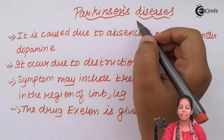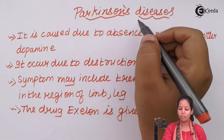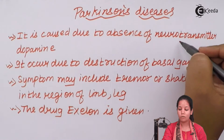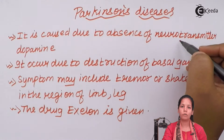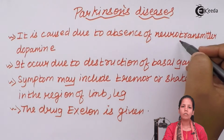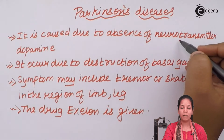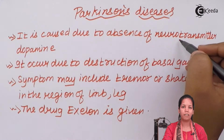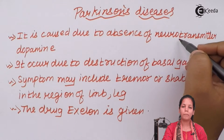Parkinson's disease is caused due to the absence of the neurotransmitter dopamine. Neurotransmitters are the chemicals that excite signaling processes between two neurons — presynaptic and postsynaptic neurons.